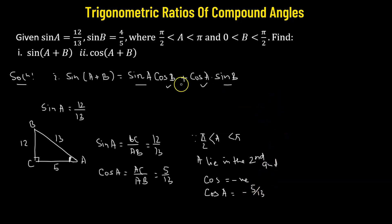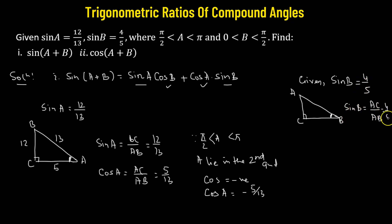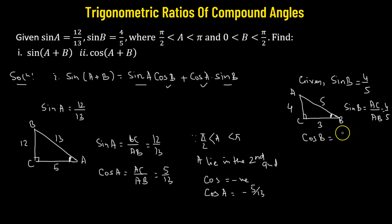Next, we find the value of cosine b. We are given sine of angle b equals 4 over 5. We consider a new right angle triangle with vertices a, b, and c, right angle at c. Sine of b is the ratio of perpendicular to hypotenuse, so ac equals 4 and ab equals 5. The third side bc must be 3, since 3, 4, and 5 form a Pythagorean triplet. Cosine of b equals bc over ab, which is 3 over 5.